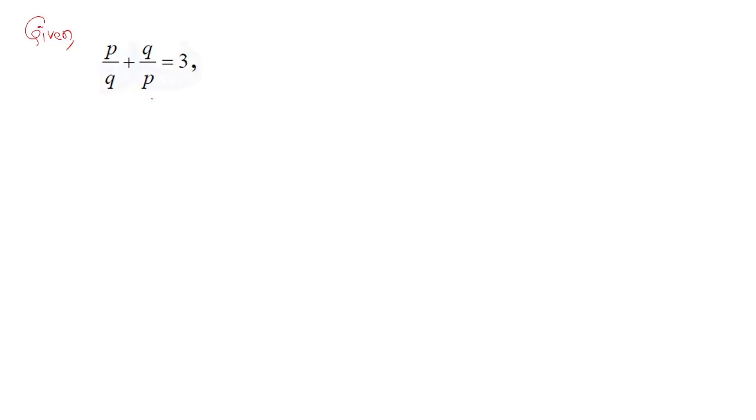We will simply square both sides, so (p/q + q/p)² = 3². Now I will just apply the polynomial identity equation we just discussed.